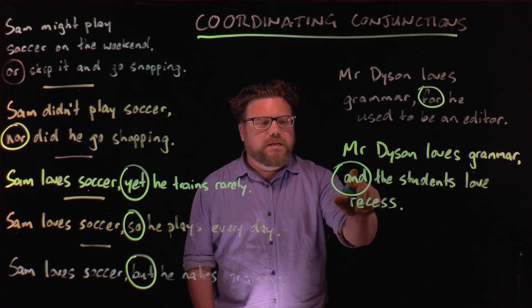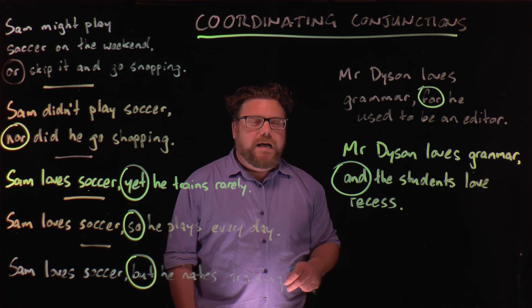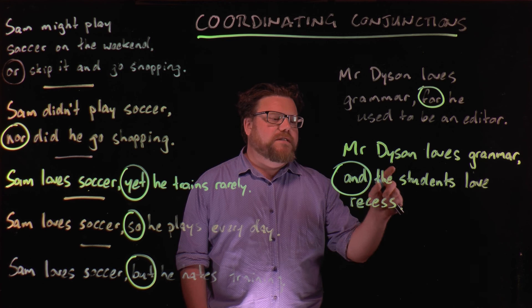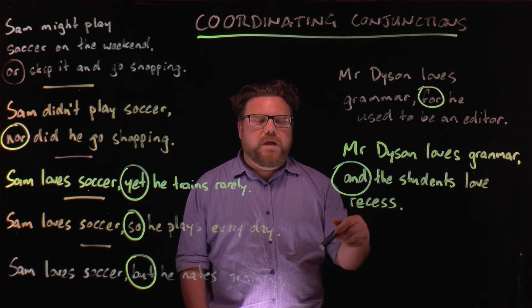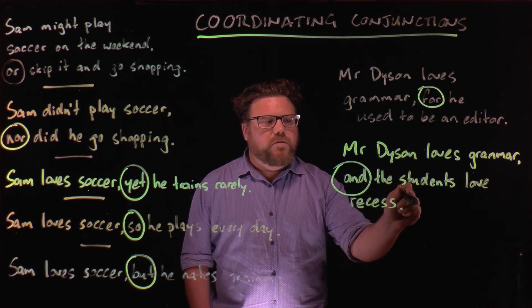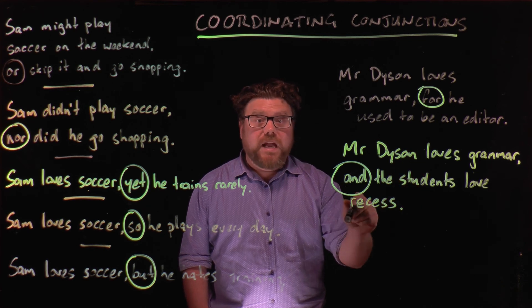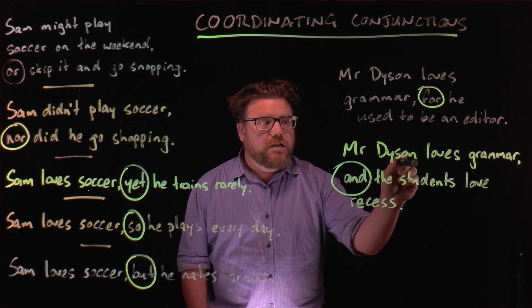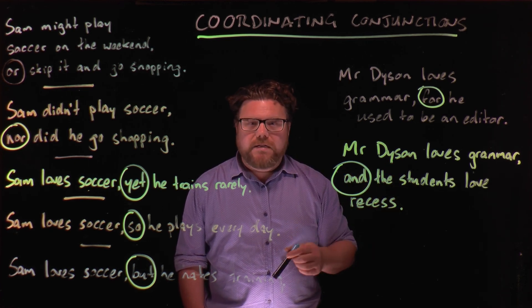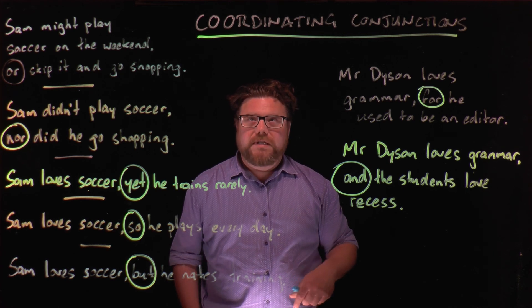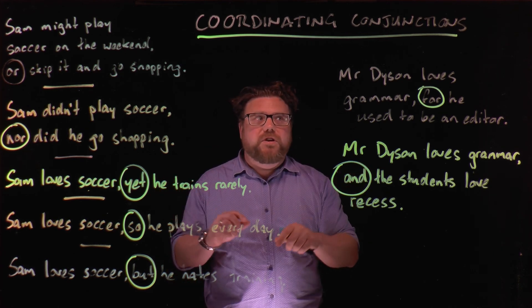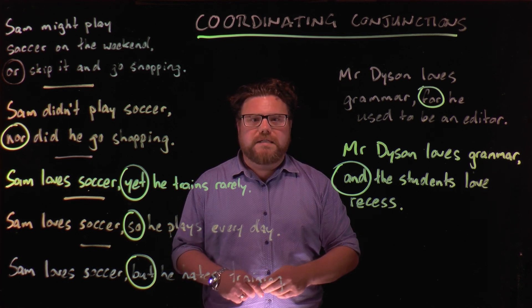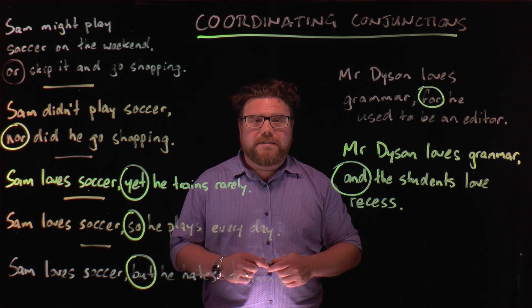And lastly, we've got the one I used as an example in our lesson on compound sentences: Mr. Dyson loves grammar, and the students love recess. This is where we're showing that the two independent clauses express ideas that have equal importance. A comma and the coordinating conjunction 'and' links these two clauses that are independent and have equal importance. These are all the different ways you can use coordinating conjunctions to bring clear meaning to your sentences, particularly your compound sentences. Thank you.